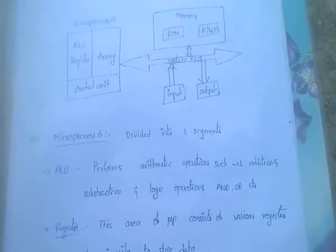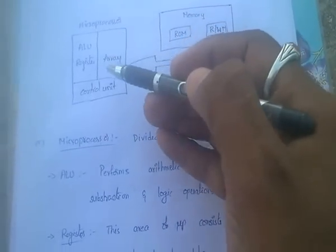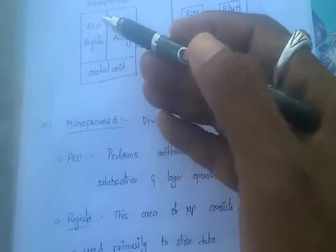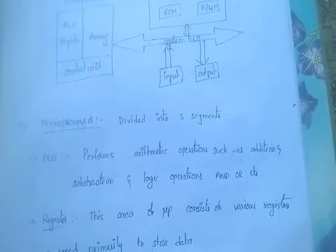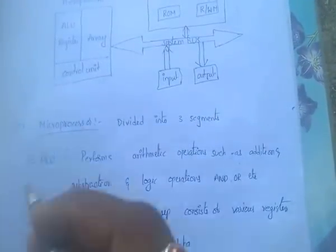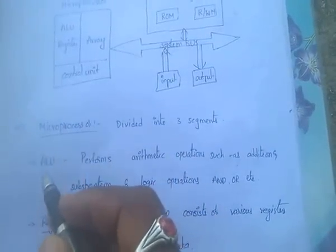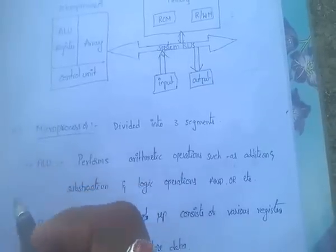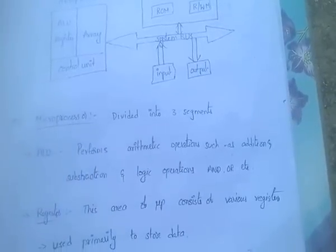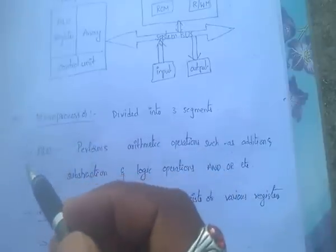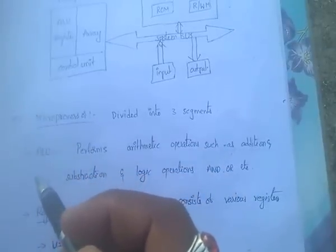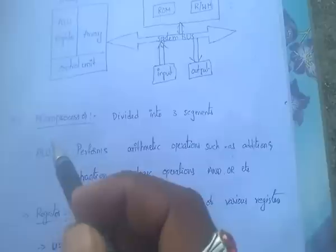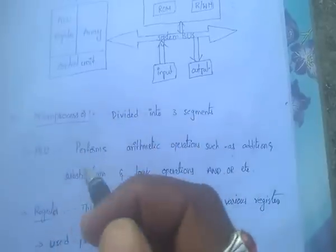The first part of a microprocessor is the ALU — Arithmetic and Logic Unit. As the name itself suggests, it performs arithmetic and logic operations. Arithmetic operations include addition, subtraction, and so on. Logic operations include AND, OR, and exclusive-OR logic.